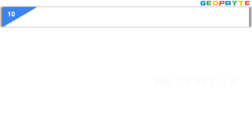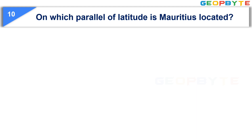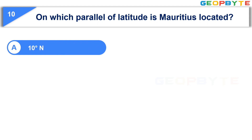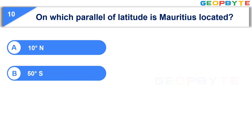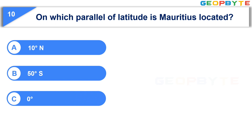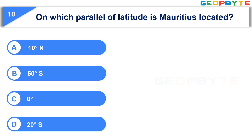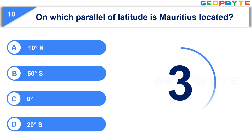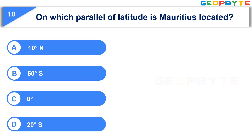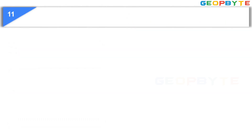Now let us see the next question. On which parallel of latitude is Mauritius located? Option A: 10 degrees north. Option B: 50 degrees south. Option C: 0 degrees. Option D: 20 degrees south. Your time starts now. Your time is up and the correct answer is Option D: 20 degrees south.